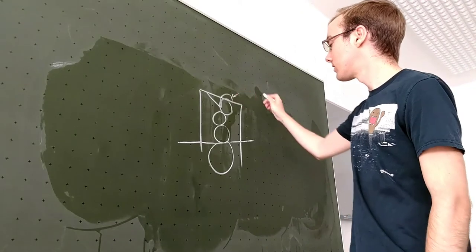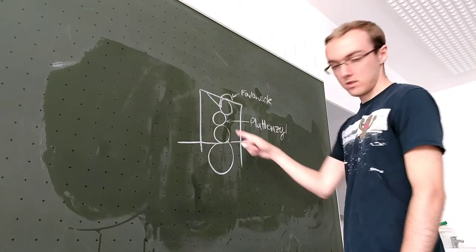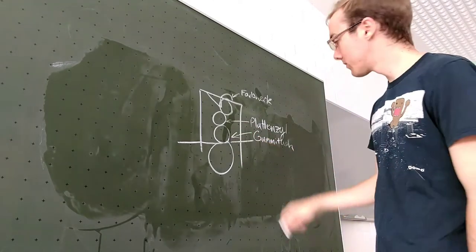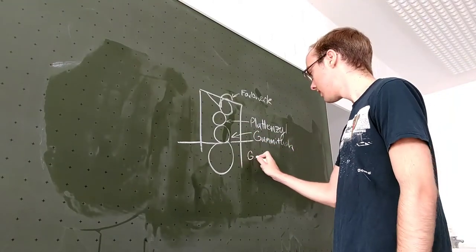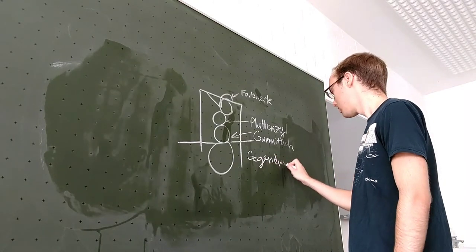And I'll just label those really quick. This is the Farbwerk. This is the Plattenzylinder. This is the Gummituch Cylinder. This is the Gegendruck Cylinder.